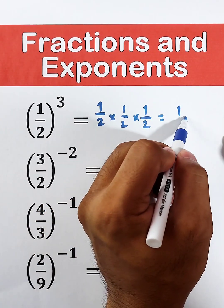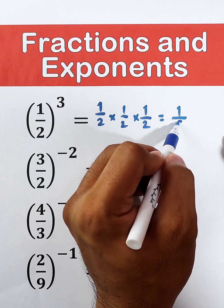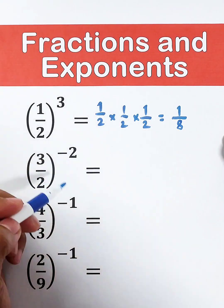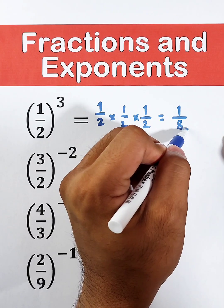And for your denominator, we have 2 times 2 times 2, and the answer is 8. As you can see, the simplified form of 1 half raised to the third power is 1 over 8.